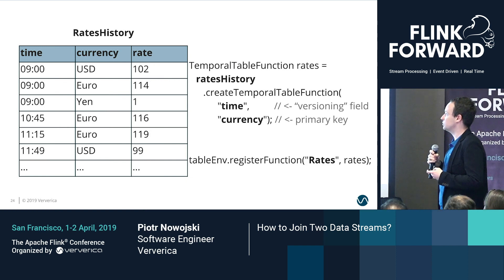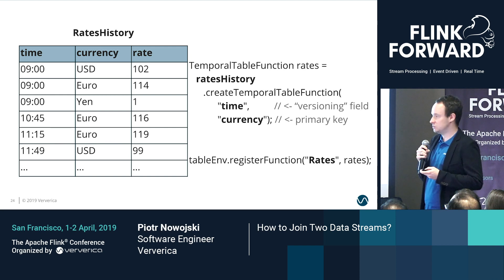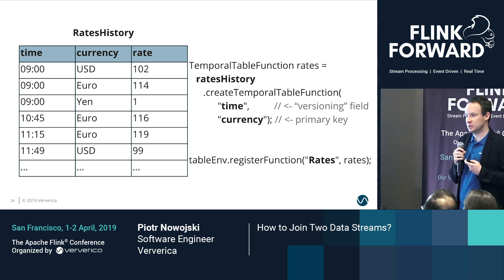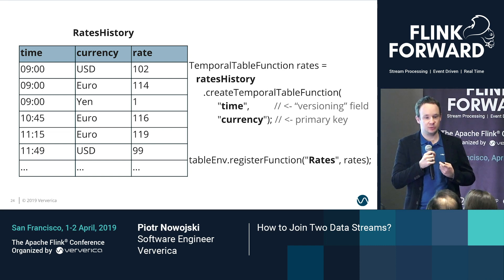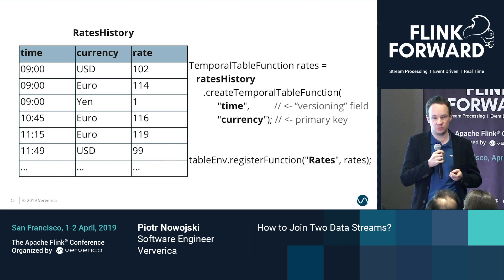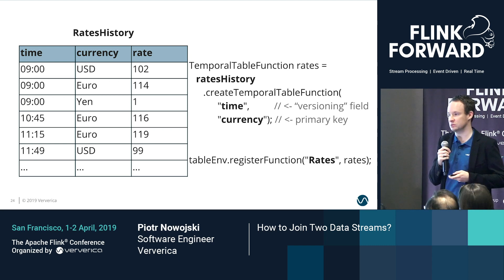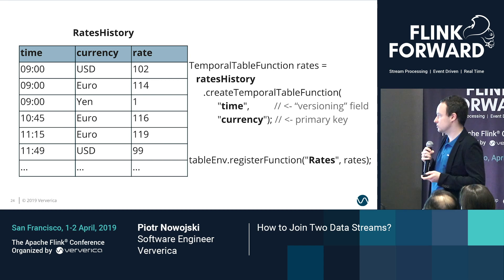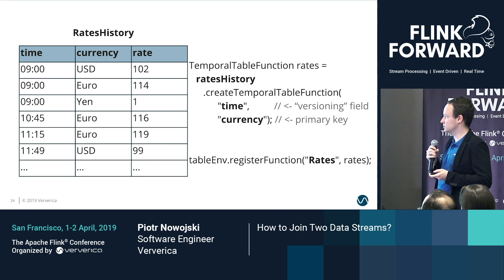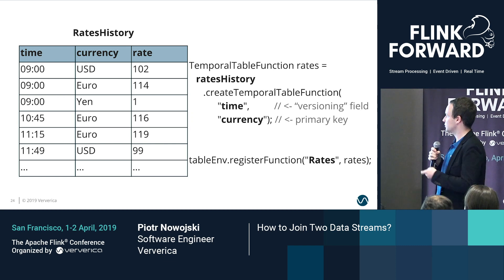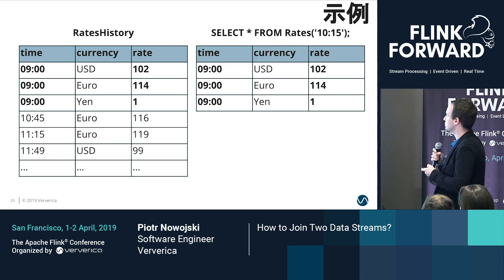To do so, we need to define a temporal table using our rates history stream. To define a temporal table, we need two things: a primary key and a versioning field. You can think of temporal tables as time-versioned tables that keep track of changes happening over time for those primary keys. So once we define a temporal table from the rates history stream using currency as the primary key, we will be tracking how the currency has changed over time. To be compliant with ANSI SQL 2002, Flink exposes temporal tables to users via temporal table functions. This code snippet registers a temporal table function called 'rates', which the user could theoretically use in the following manner.